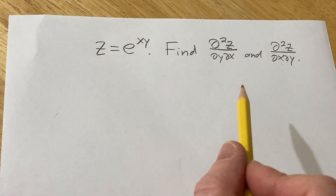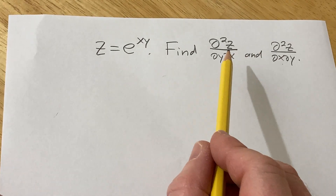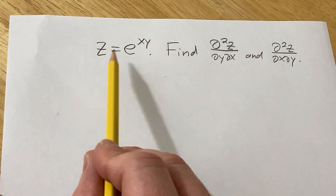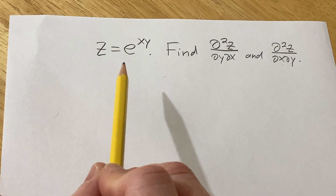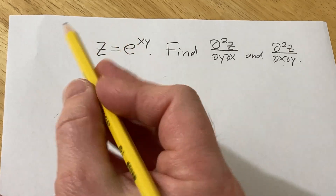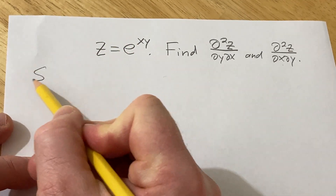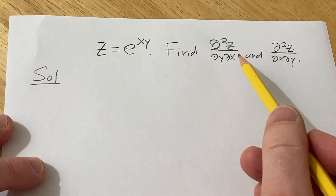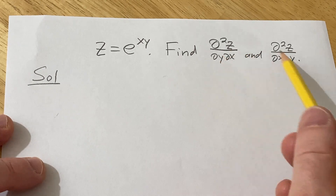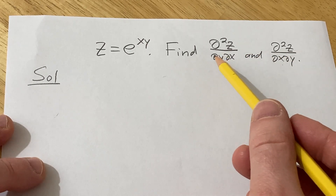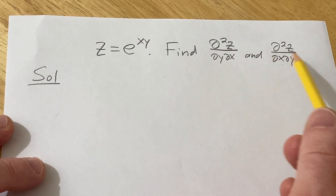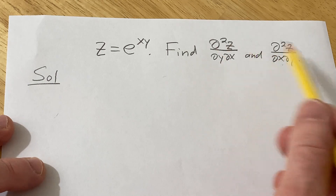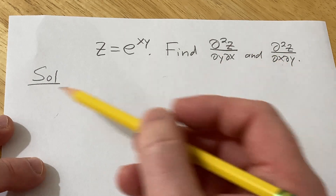Hello, in this video we're going to find the second-order partial derivatives for this function here. These should be the same in this problem because they're continuous, and there's a theorem that says basically when these are continuous, they're going to be the same.